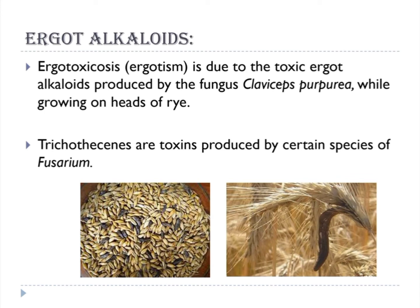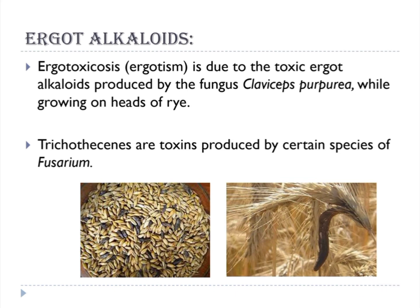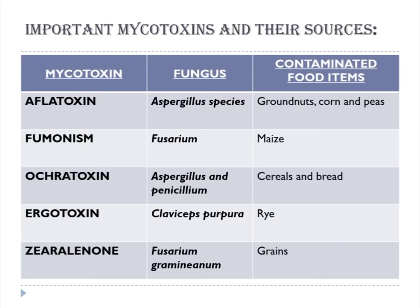Ergot alkaloids: ergotoxicosis is due to the toxic ergot alkaloids produced by the fungus Claviceps purpurea while growing on heads of rye. Trichothecenes are toxins produced by certain species of Fusarium. Here is the list of important mycotoxins and their sources.